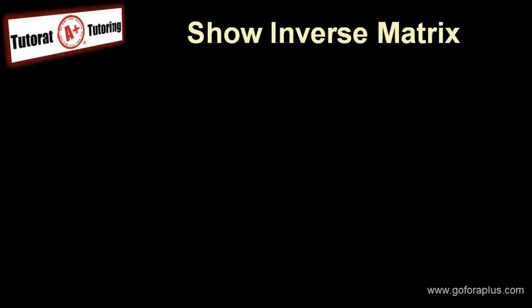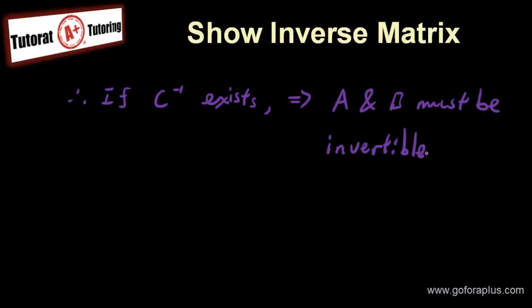So let me put down the conclusion. Therefore, if C^(-1) exists, it means that A and B must be invertible. Meaning A^(-1) exist.